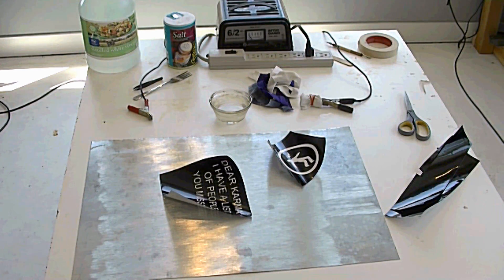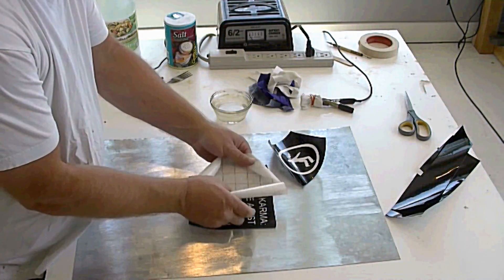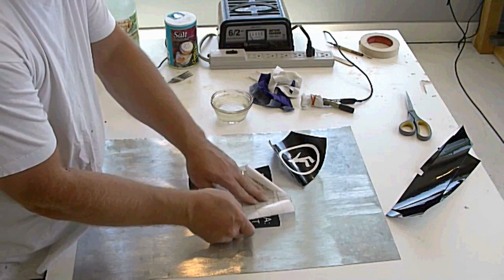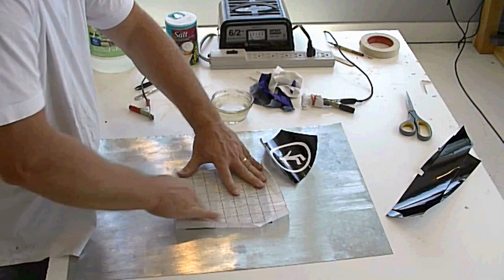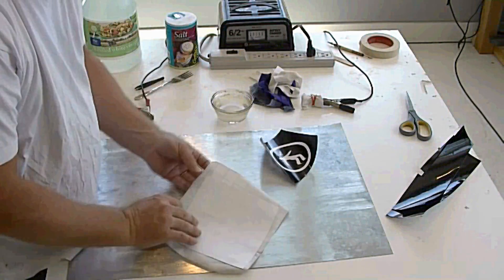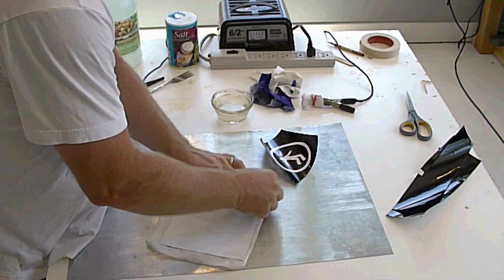The next thing you want to do is use this stuff called transfer paper. You can get it at Michael's or any craft store. This is different than contact paper. It's a little bit more like post-it note stickiness as opposed to contact stickiness because I need it to peel off.